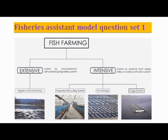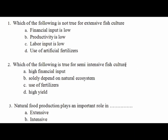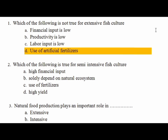Question 1: Which of the following is NOT true for extensive fish culture? Option A — financial input is low: that is true for extensive farming. Option B — productivity is low: that is true. Option C — labor input is low: that is true. Option D — use of artificial fertilizers: this is NOT true for extensive culture, as there is no artificial input. So the answer is the use of artificial fertilizers — that is the option that does not apply to extensive fish culture.